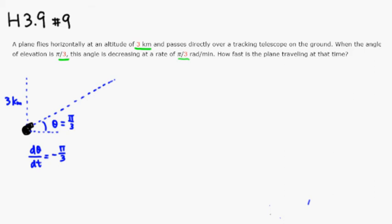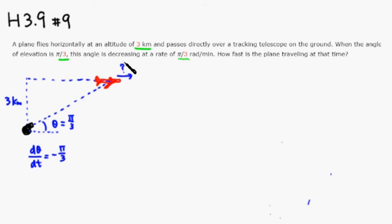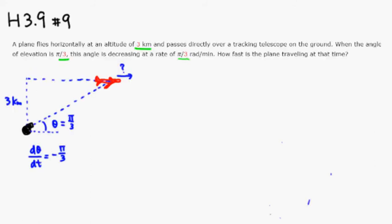So we know that dθ/dt is equal to negative π/3. The plane is moving horizontally. This horizontal distance is changing, so let's call it x. What we're looking for is dx/dt.